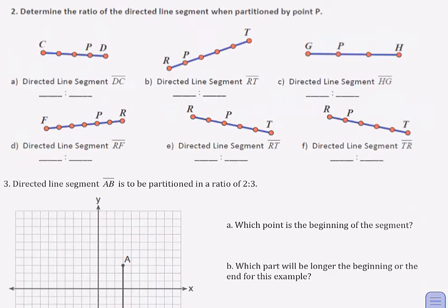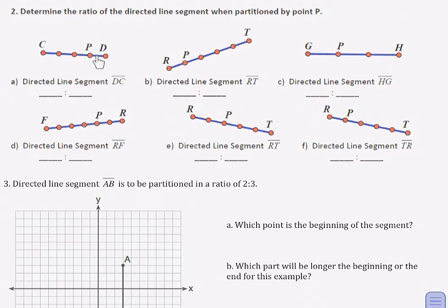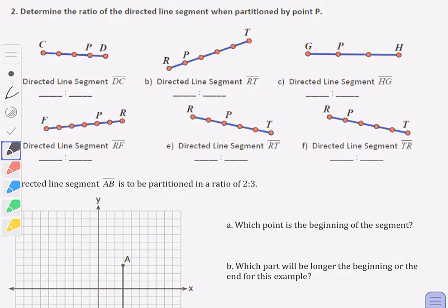Let's do more practice with directed line segments and ratios, all rolled into one question. I'll lead you through three of these six questions, and then you can try three on your own. We're looking at how these segments are broken up — determine the ratio of the directed line segment when it is partitioned by point P. In question A, this is directed line segment DC, so D is the beginning and C is the end. D is getting one of the pieces and C is getting three of the pieces, so that would be a ratio of one to three.